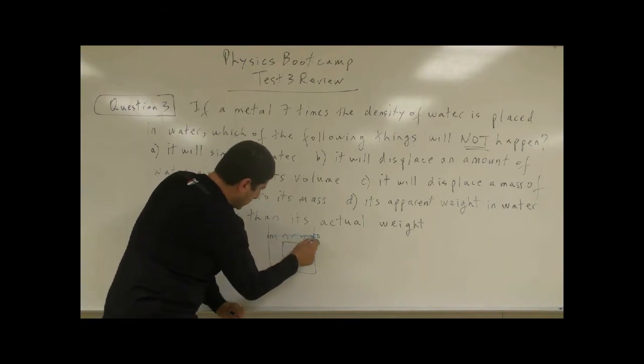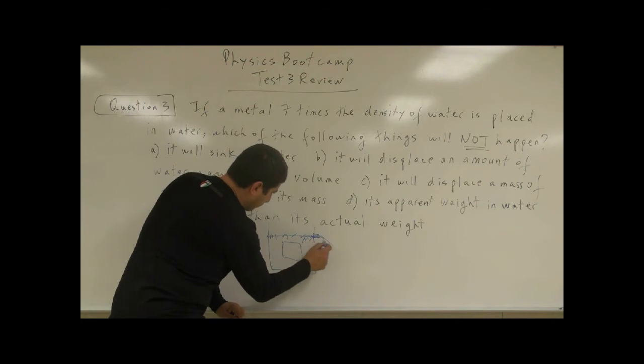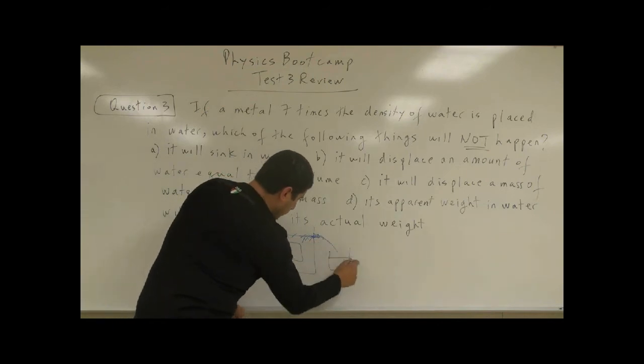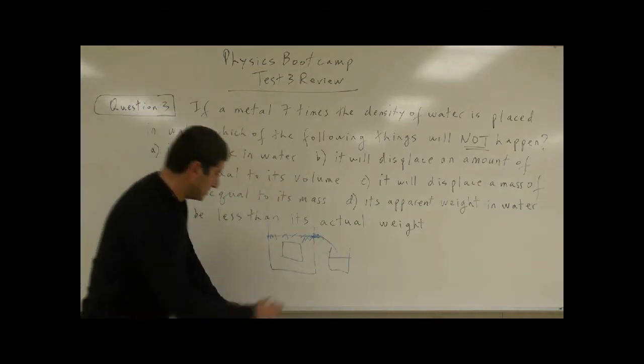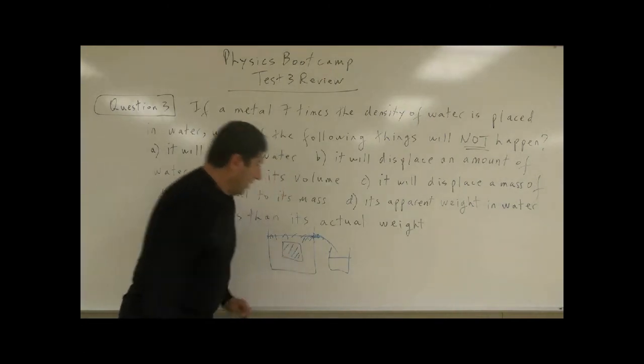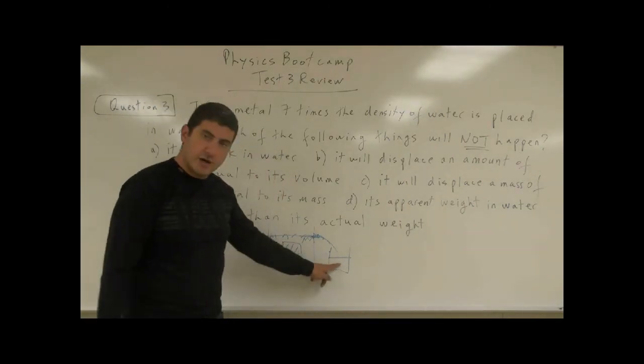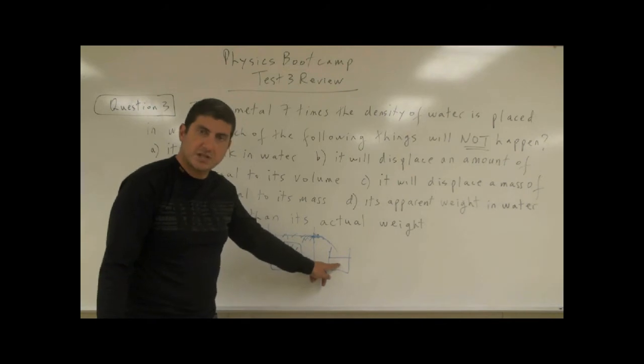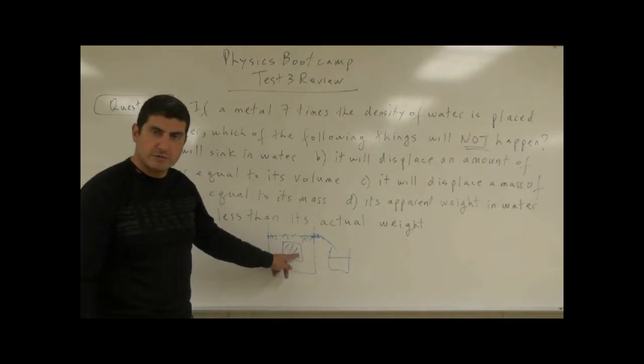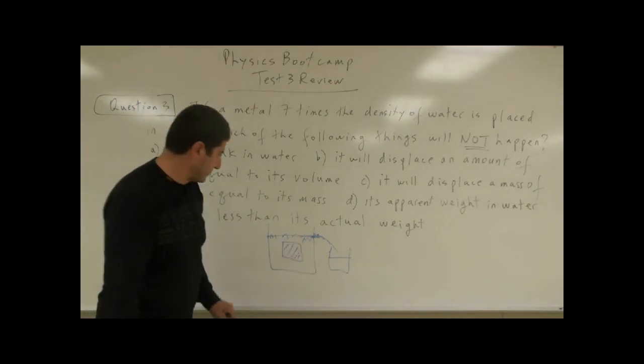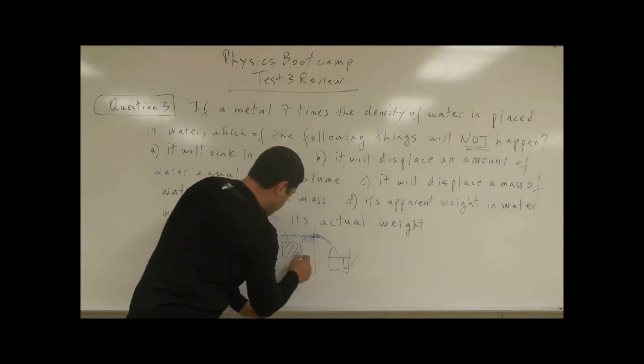The water rises, and then it starts to spill from here, and then you can collect the water over here. So what's going to be the volume of that water that is spilled? It's going to equal to the volume of the object, because all of it is submerged. So this is V, this is also V.